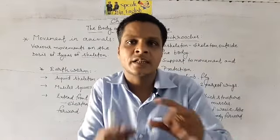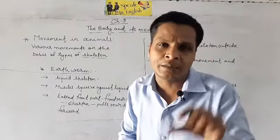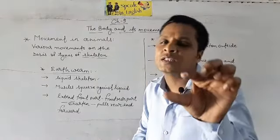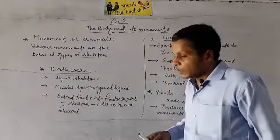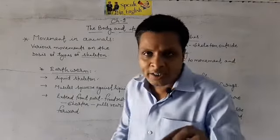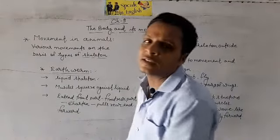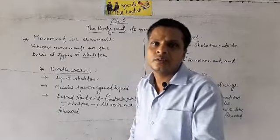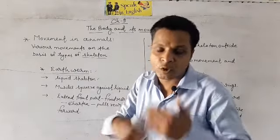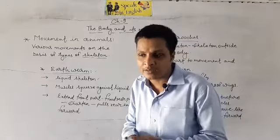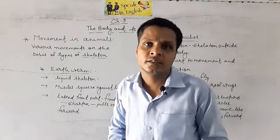The front part expands and the rear part is fixed in one place. After the front end extends, the rear end is then sent forward. This process continues, and that is how the earthworm crawls.